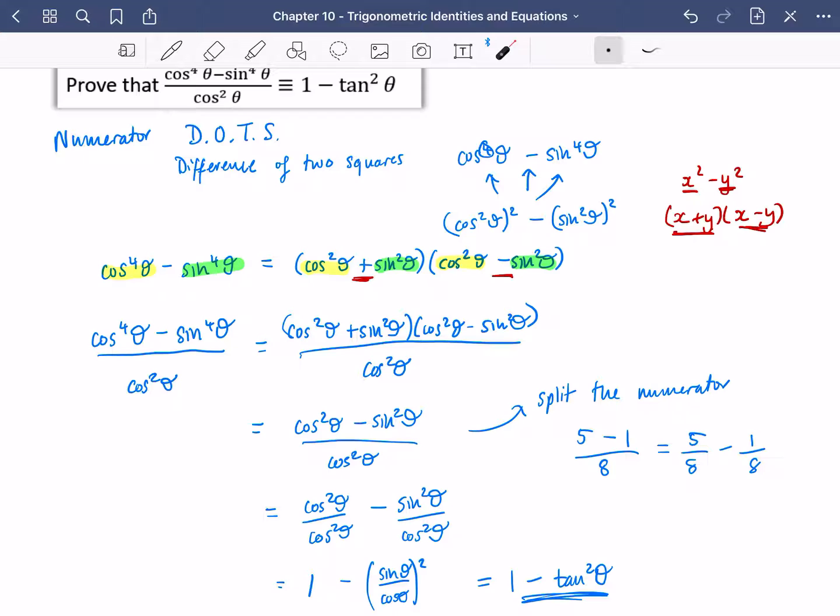So this is a tough question. We look at the numerator, which is a difference of two squares. We use the Pythagorean identity. So this is 1 and it disappears. Then we split the numerator like we do with numerical fractions. So we have cos squared theta over cos squared theta and sin squared theta over cos squared theta. Cos squared over cos squared is 1 and sin squared over cos squared is the same as tan squared. Very tough question.